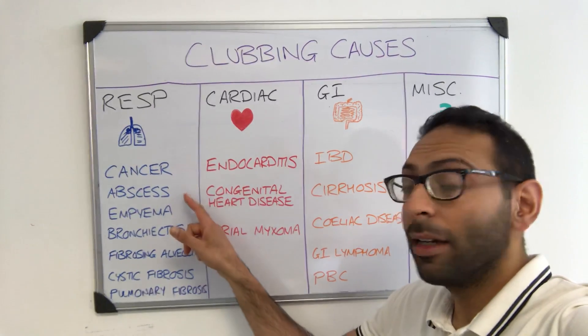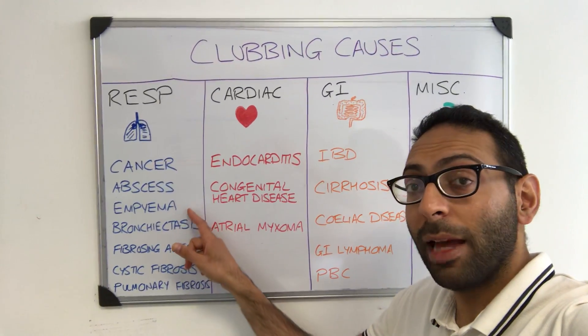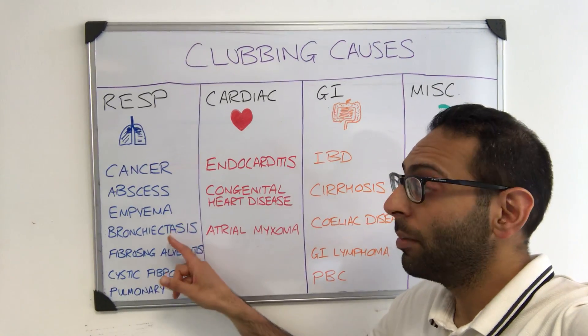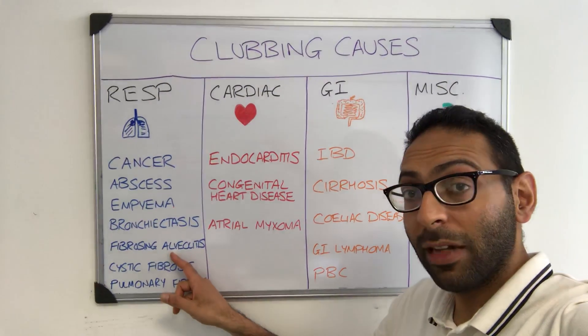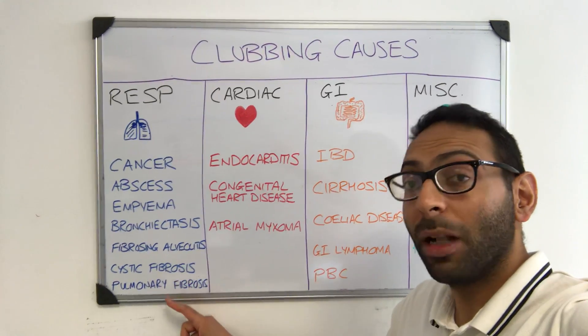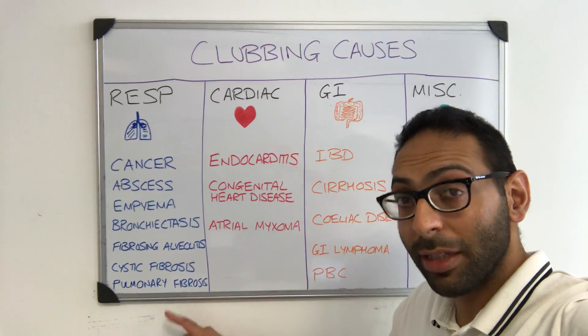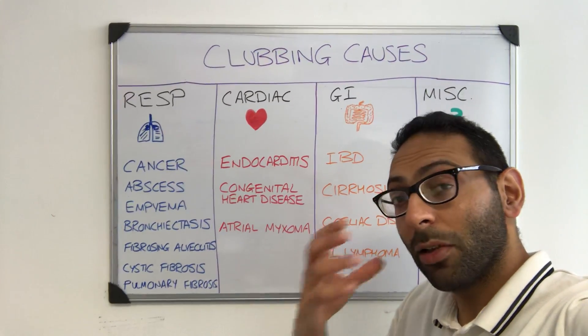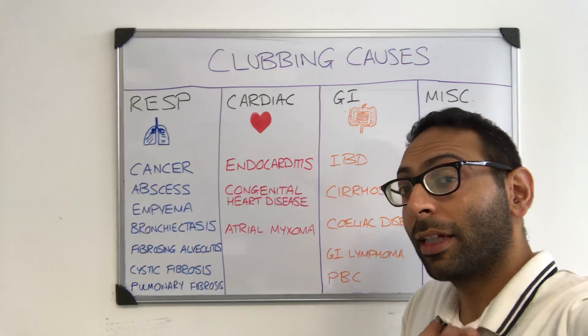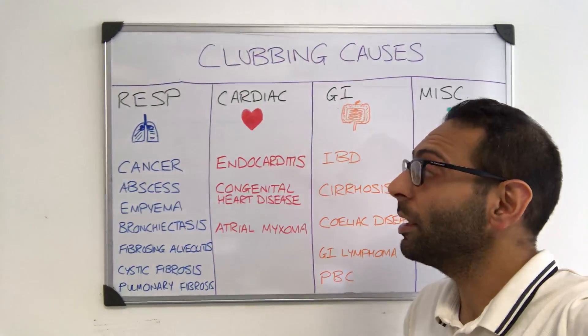Lung cancer, lung abscess, empyema, bronchiectasis, fibrosing alveolitis, cystic fibrosis, pulmonary fibrosis, and things like sarcoidosis. There are lots of causes that can originate from the lung.